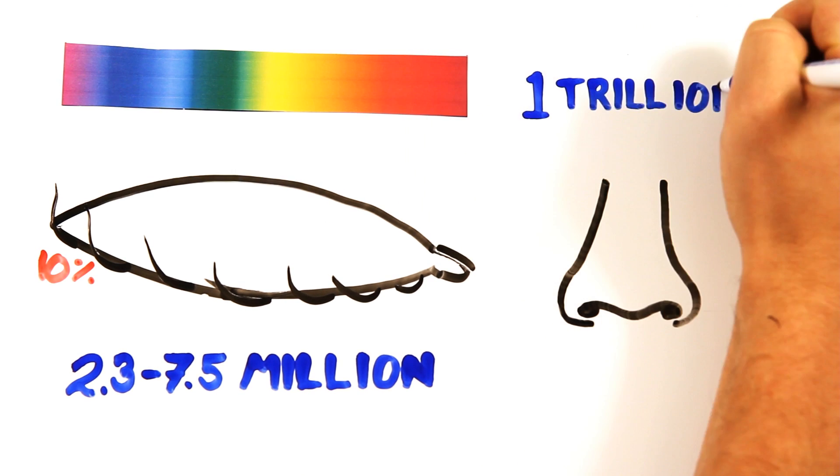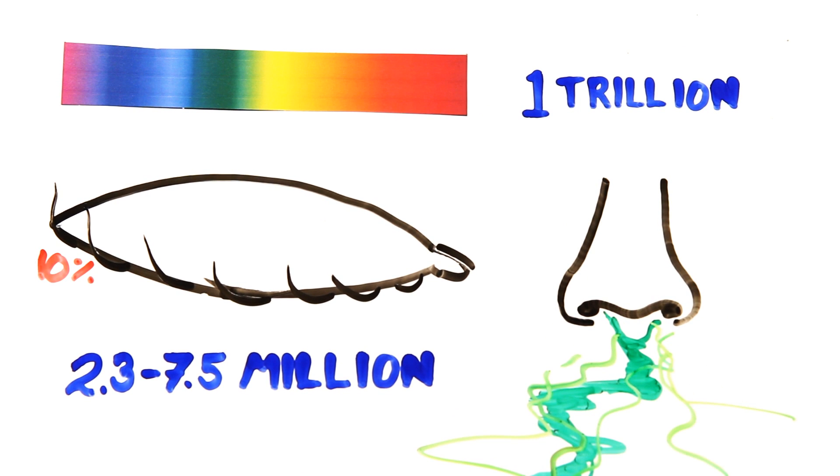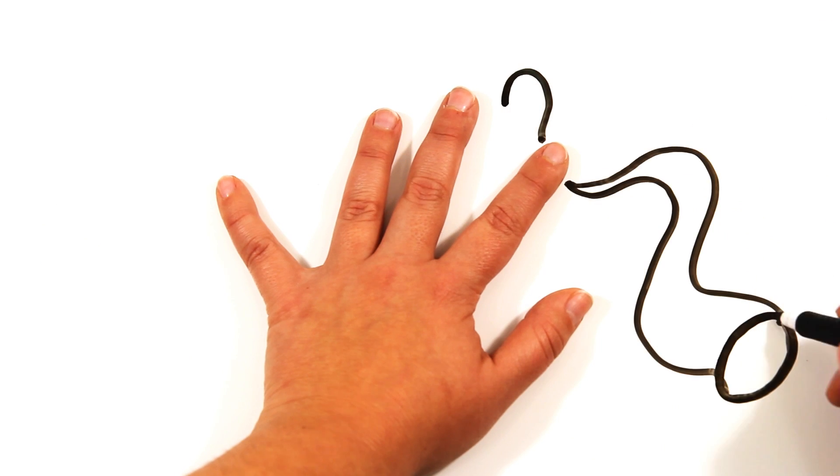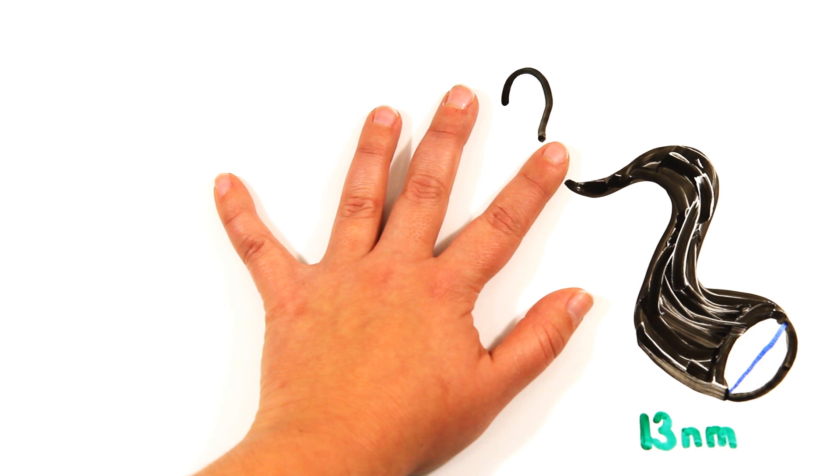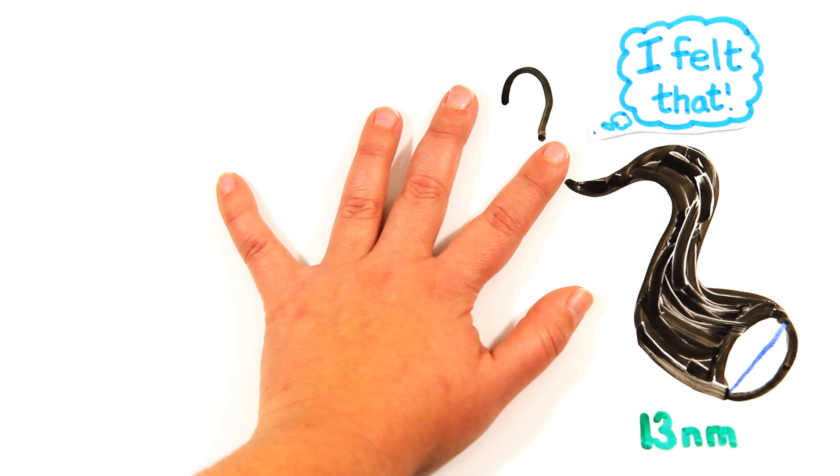Your nose is able to discriminate between 1 trillion different smells. Meanwhile, your fingers can feel a ridge as small as 13 nanometers in size. That's 7,500 times smaller than the diameter of a human hair.